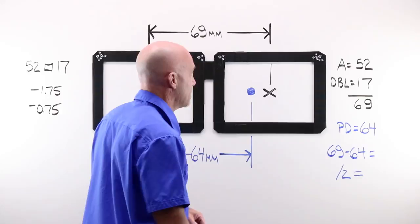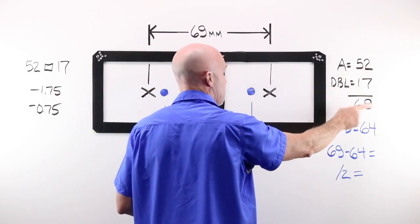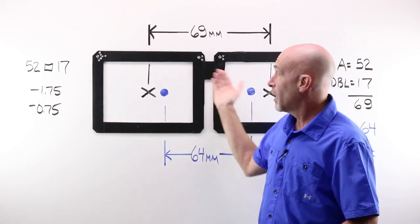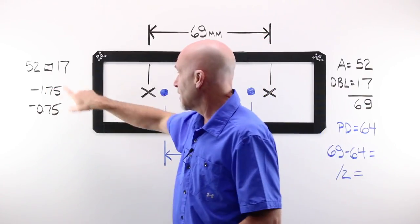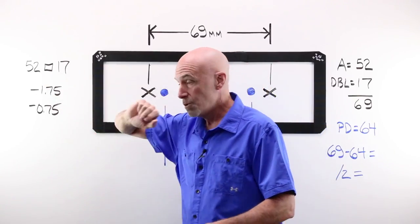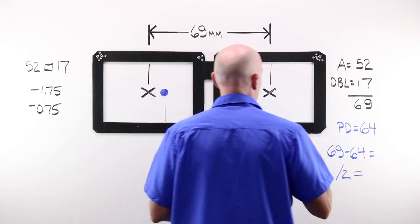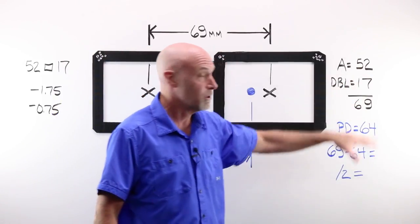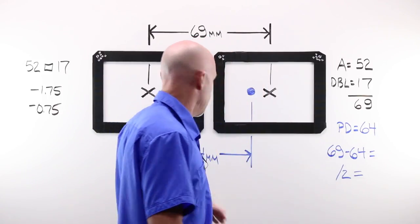I have a frame PD of 69 millimeters because I have an A of 52 and a DBL of 17. Seven plus two is nine, five and one is six. My boxing system, somewhere on that frame, would be marked like that. And I'd have minus 175, minus 75. Not enough power there to worry about. You could just use your boxing system. As powers increase, as things become more complex, yes, you would want to use a PD stick and verify or confirm that those are accurate measurements.